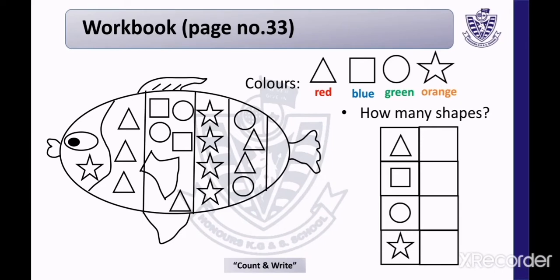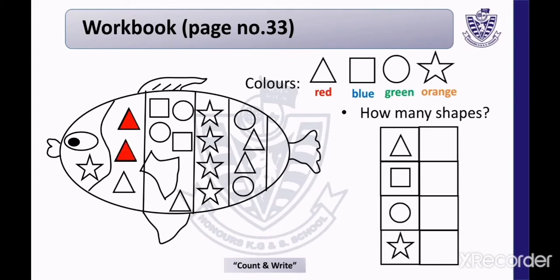Good students. Now look at the picture — this is a picture of a fish. Now we will color the triangles first. You know we will color the triangle with red color, like this. Similarly, color all the other triangles.